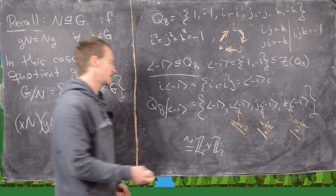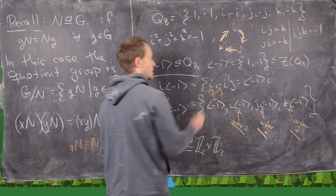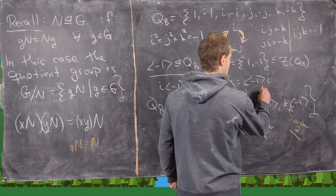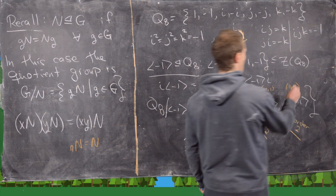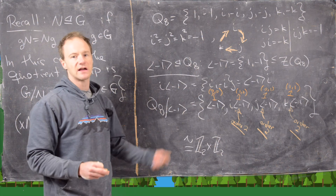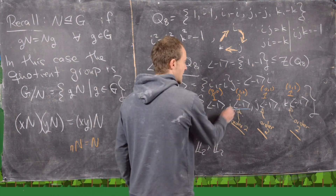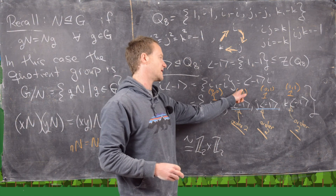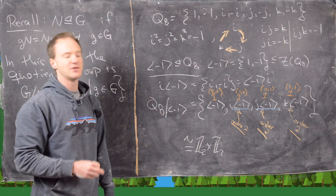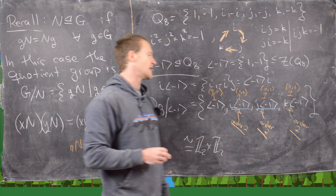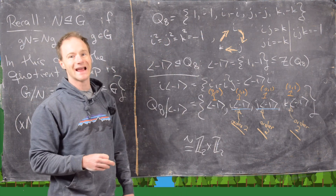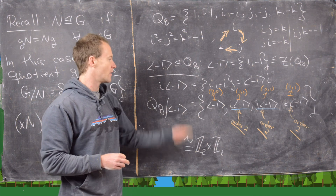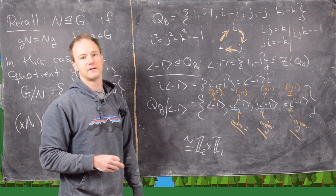Since we have a group of order 4 where every non-identity element has order 2, it must be Z2 × Z2, the only non-cyclic group of order 4. An explicit isomorphism sends ⟨-1⟩ ↦ (0,0), i⟨-1⟩ ↦ (1,0), j⟨-1⟩ ↦ (0,1), and k⟨-1⟩ ↦ (1,1). Note that i·j gives coset k⟨-1⟩, matching (1,0)+(0,1)=(1,1). And since j·i gives -k, whose coset equals k⟨-1⟩ (absorbing the -1), commutativity holds in the quotient. This completes the analysis of all subgroups of Q8.